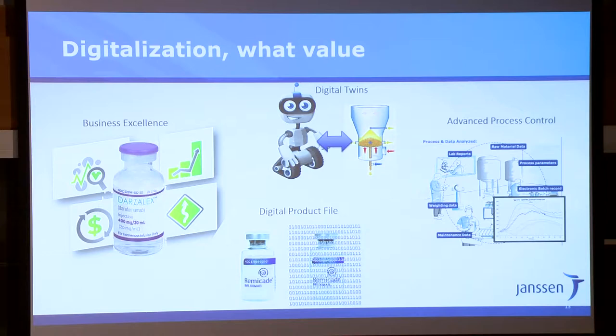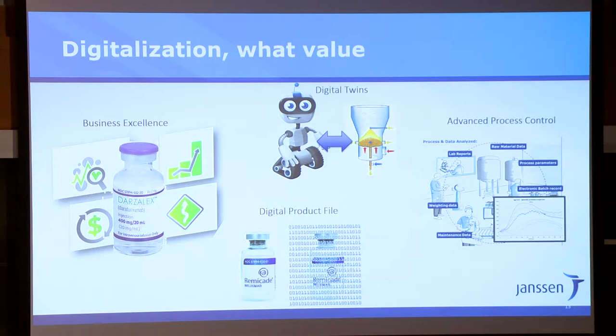I already described the digital product file where all these digital elements come together. In the end, what we're looking for is really advanced process control, adaptive process control. In today's environment, the regulators want you to always run it the same way — it's a black box. But we're saying: the temperature changes, the season changes, raw materials will have changes. We want to do engineering controls here, not just procedural controls. That's the goal, and we have already been doing these things.